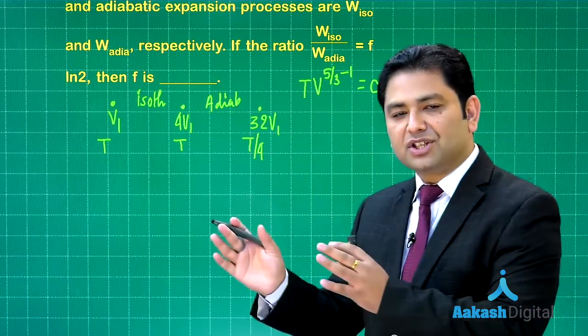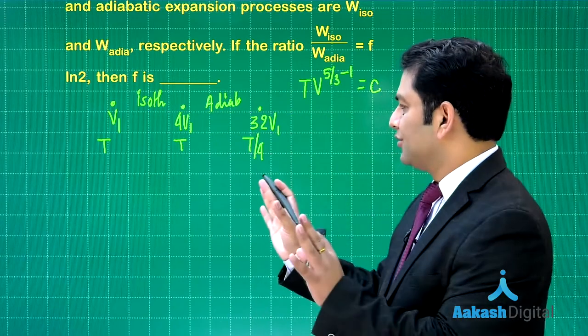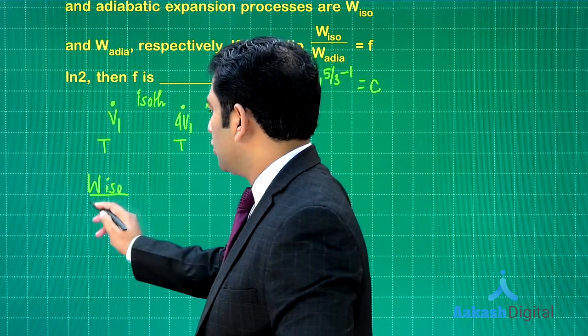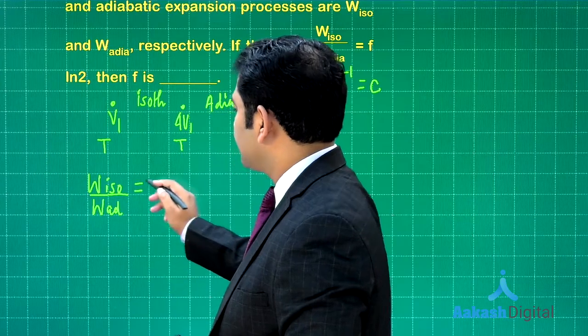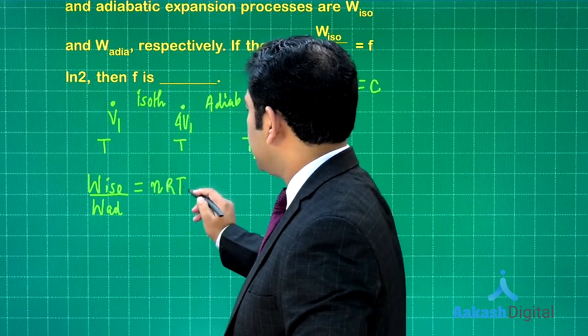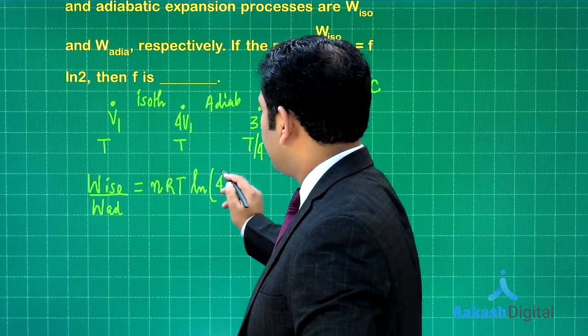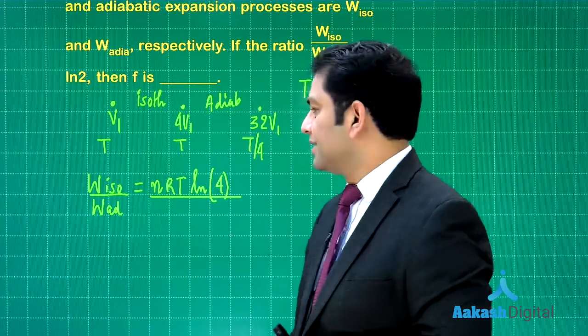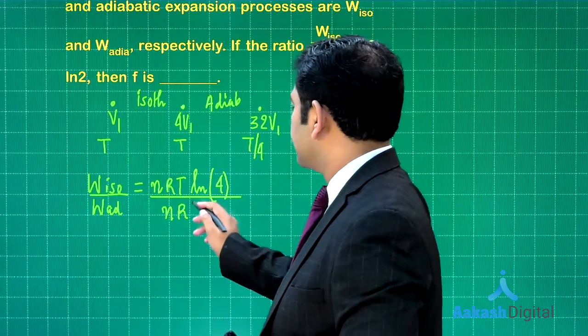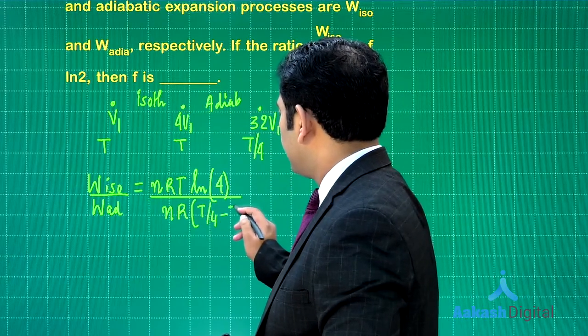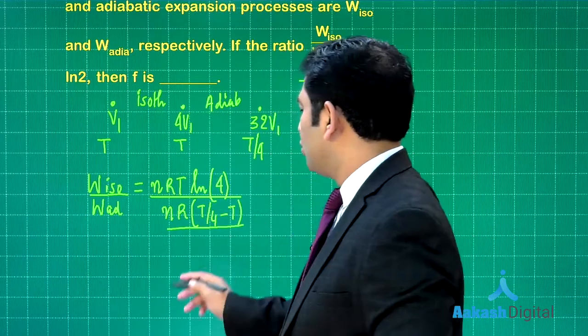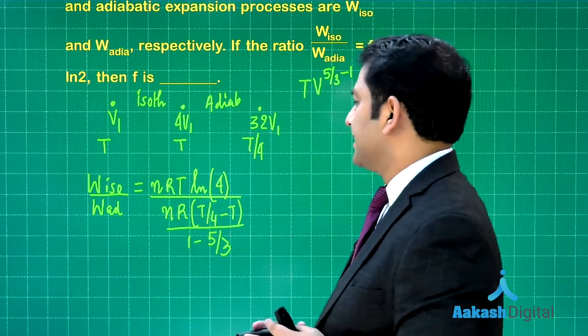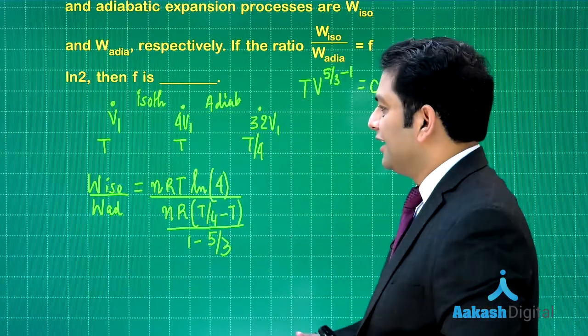Work done isothermal to work done adiabatic: for isothermal it's nRT natural log of final volume by initial volume, divided by for the adiabatic, which is nR delta T, so that's going to be T/4 minus T divided by 1 minus gamma. That will be 1 minus 5/3.